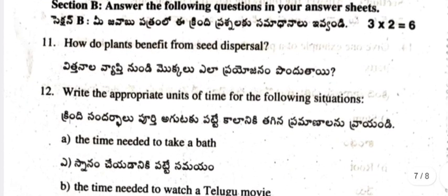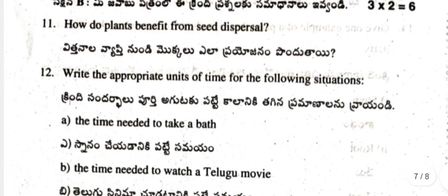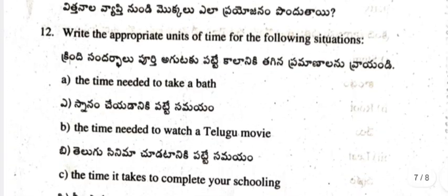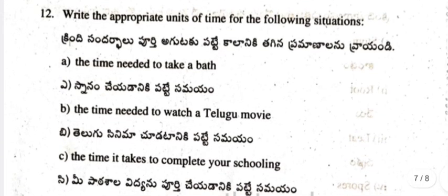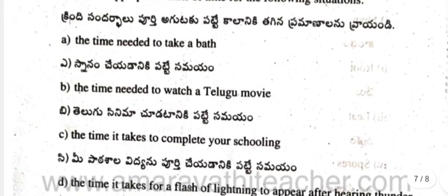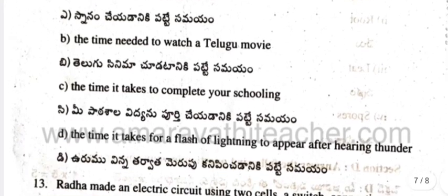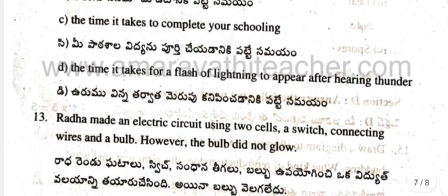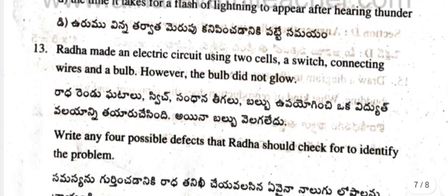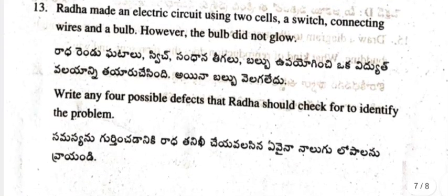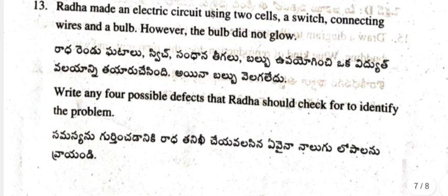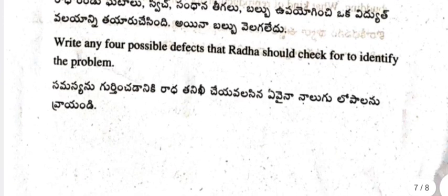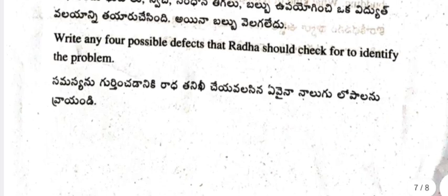Section B — Answer the following questions (3 × 2 = 6 marks). Question 11: How do plants benefit from seed dispersal? Question 12: Write the appropriate units of time for the following situations: (a) time needed to take a bath, (b) time needed to watch a movie, (c) time to complete your schooling, (d) time for a flash of lightning to appear after hearing thunder. Question 13: Rada made an electric circuit using two cells, a switch, connecting wires, and a bulb, but the bulb did not glow. Write any four possible defects Rada would check to identify the problem.